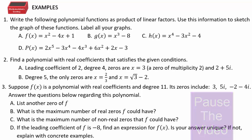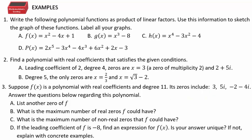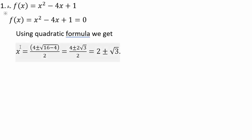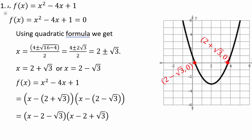Don't get stressed — take one problem at a time, take deep breaths, stay positive, and just attempt. For the first problem, x squared minus 4x plus 1 equals 0, it's a quadratic so use the quadratic formula with a equals 1, b equals negative 4, c equals 1. You get x equals 2 plus or minus square root 3. So we can factor f of x as x minus 2 plus square root 3 times x minus 2 minus square root 3. The x-intercepts are 2 minus square root 3 and 2 plus square root 3, and since the leading coefficient is positive, the parabola opens upward.